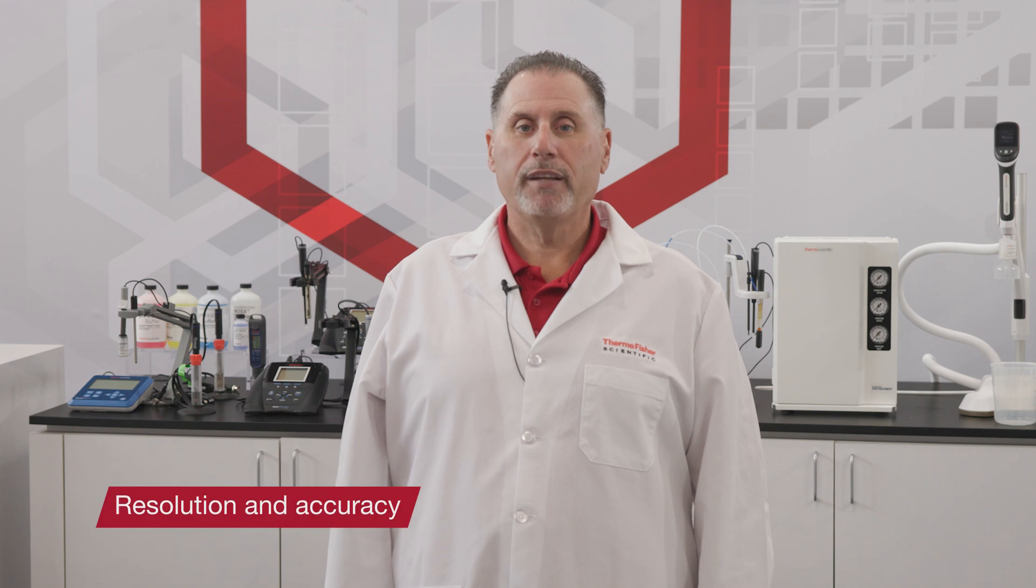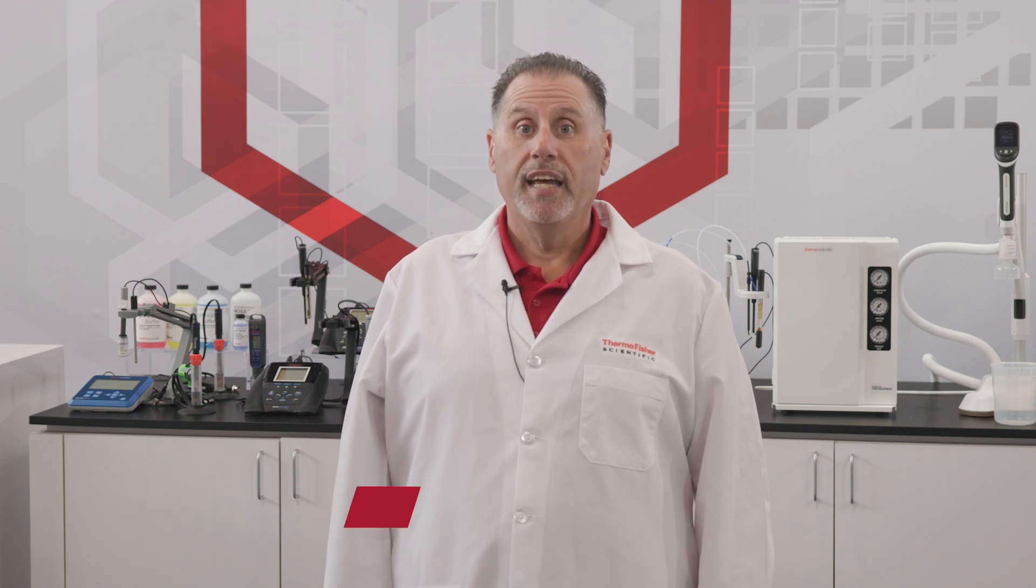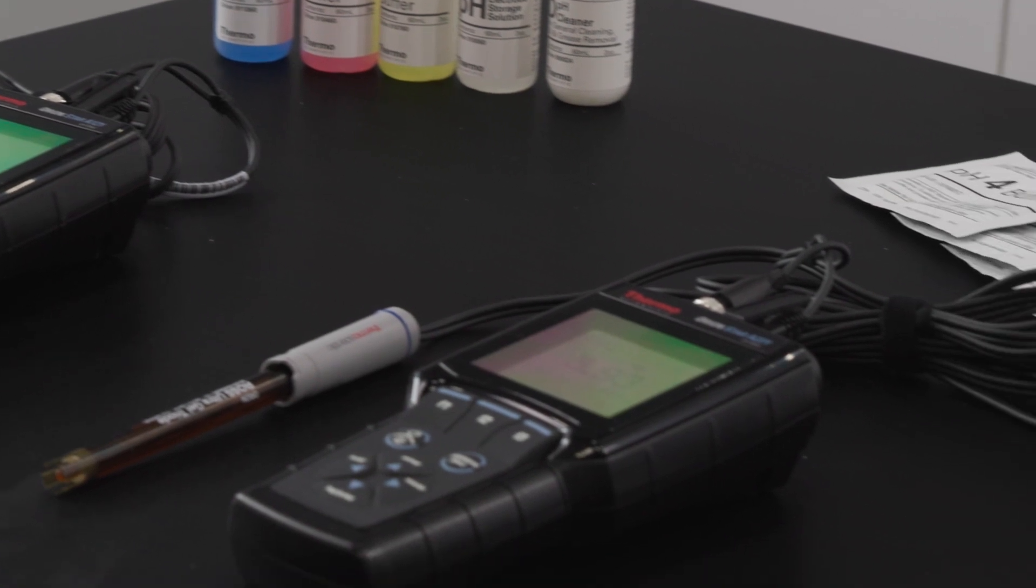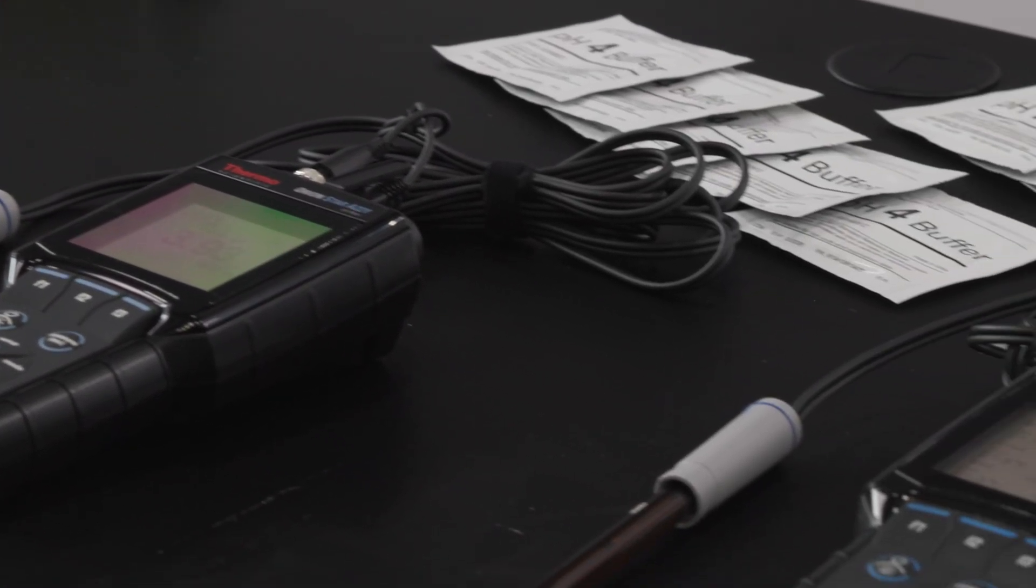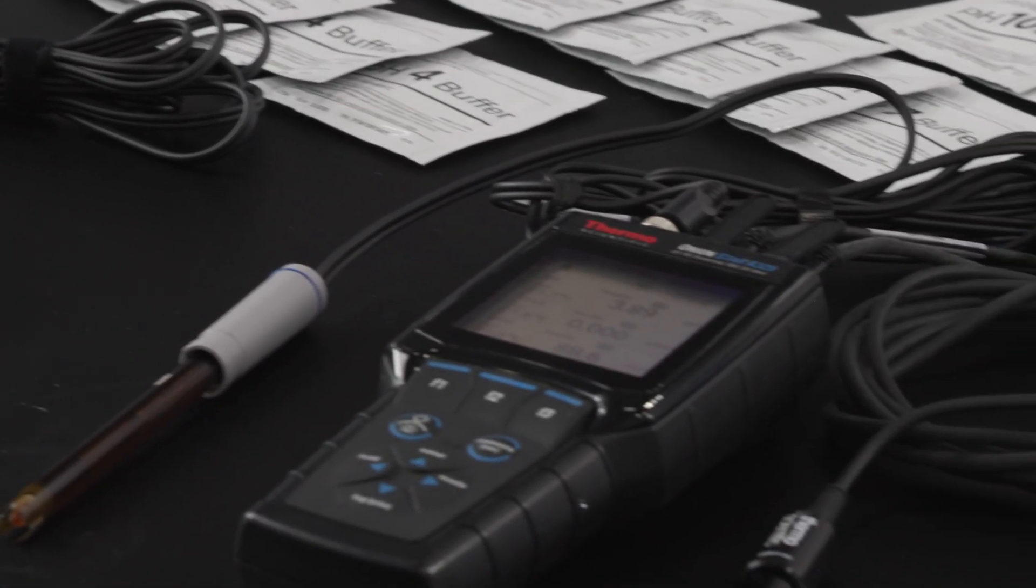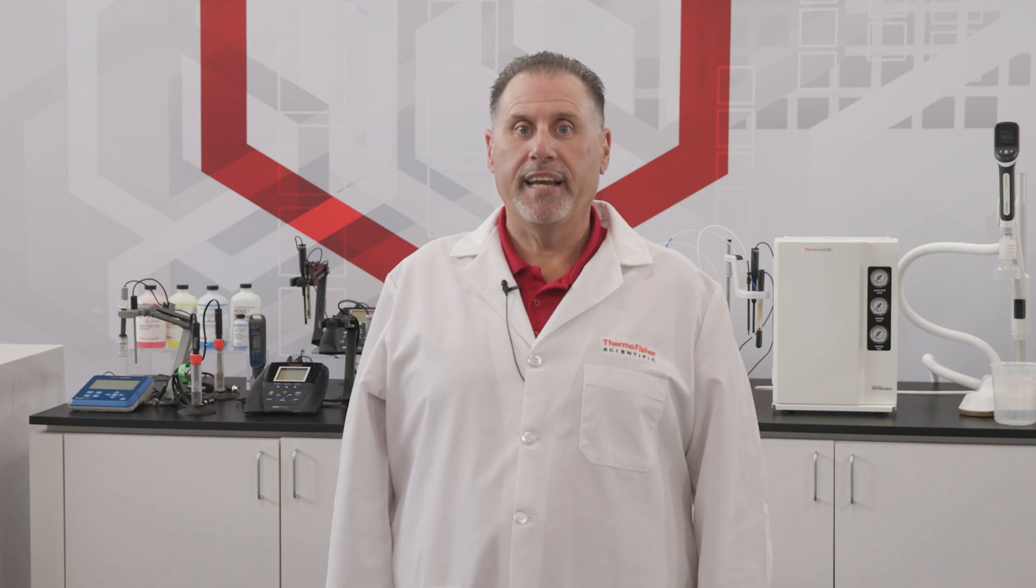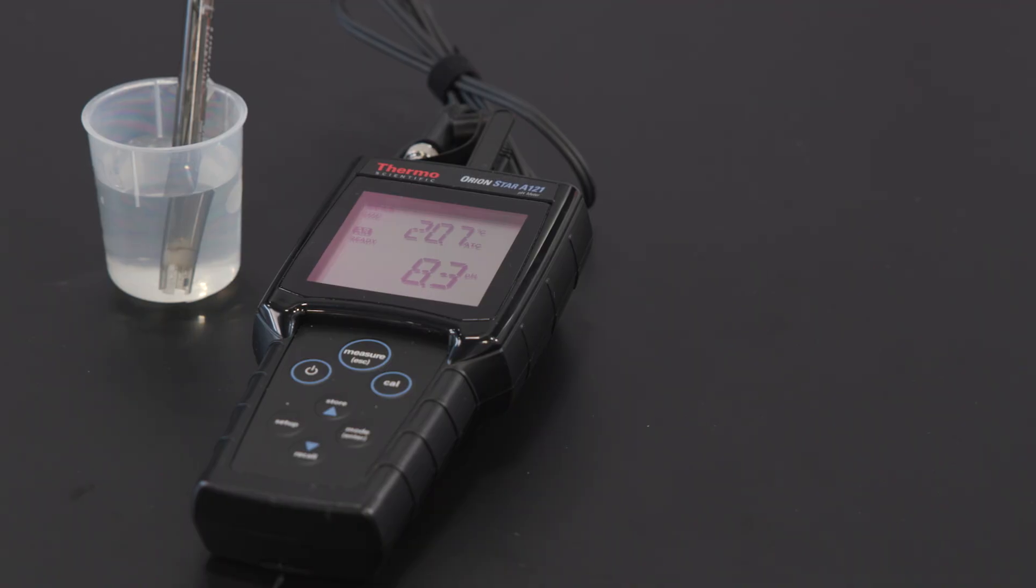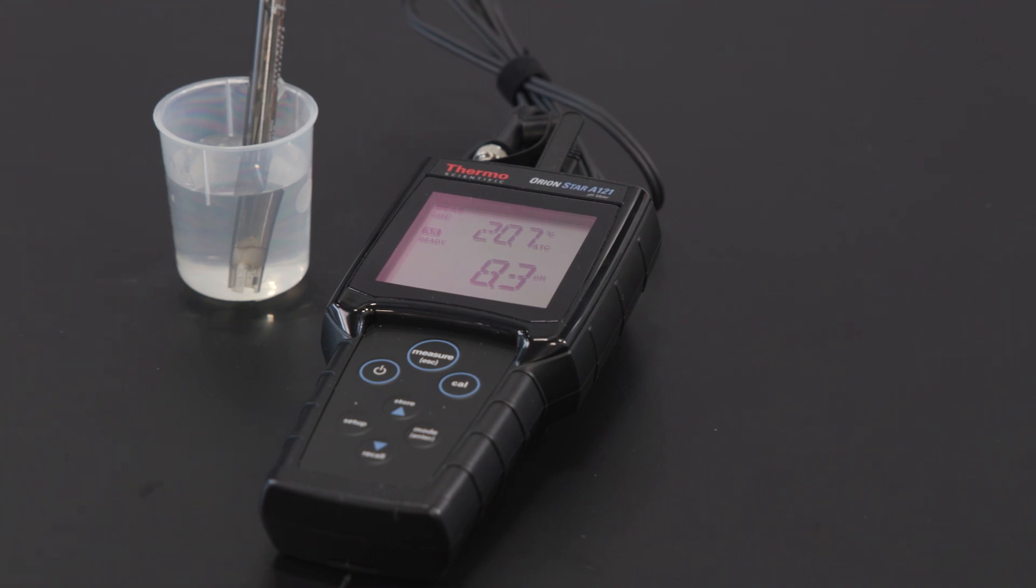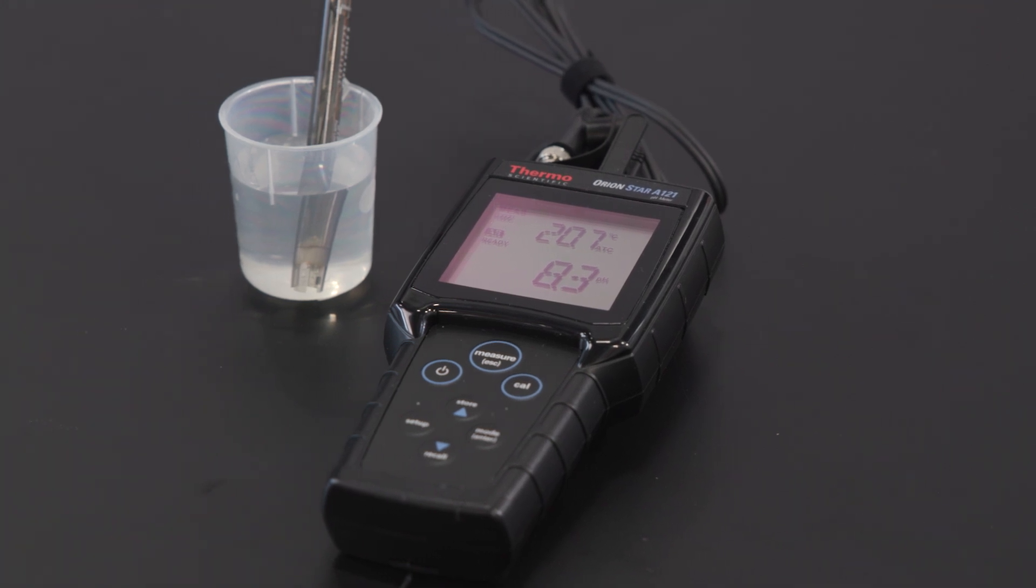Next, let's think about the resolution and accuracy required for your pH readings. Does your testing call for a resolution of 0.1, 0.01, or 0.001 pH? Verify your accuracy needs against meter specifications. Note that accuracy is dependent on the solution temperature during calibration and testing.